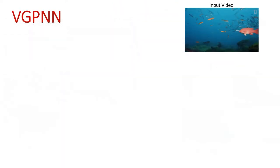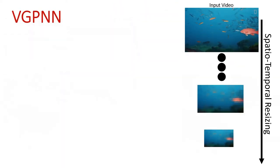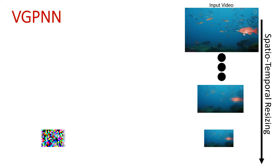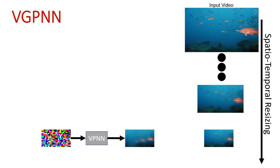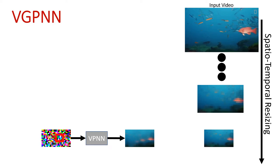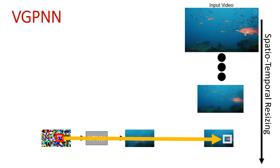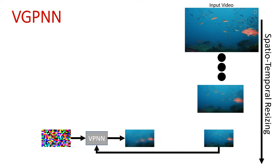Given an input video, we compute a spatial-temporal pyramid, then proceed to generate a new video sample in a coarse-to-fine manner. For each new output, we sample a random input and feed it to the coarsest level of a VGPNN module, where each spatial-temporal patch is replaced with its nearest neighbor patch from the coarsest level of the original video.